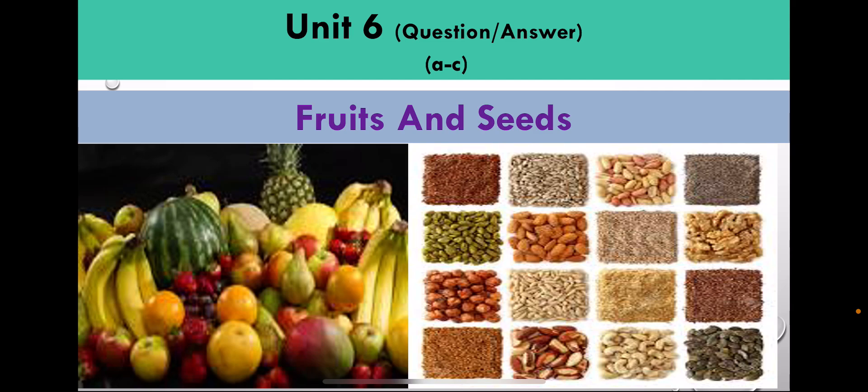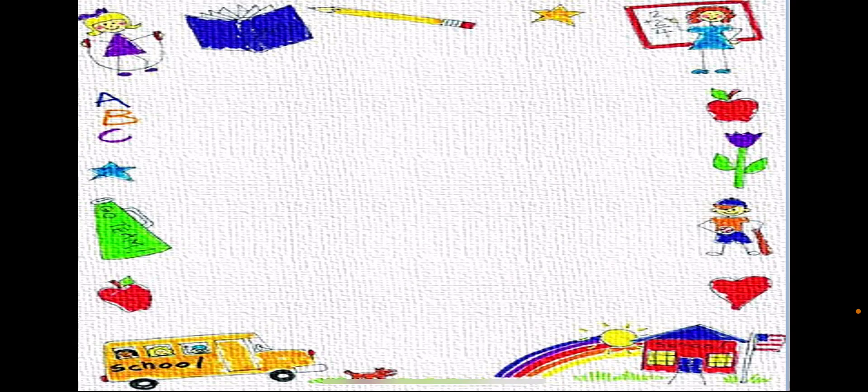So students, kindly open your notebook. Write down today's date, 6th May 2021. Classwork, and the day is Thursday. Draw the marginal line. Write down unit number 6, Fruits and Seeds.